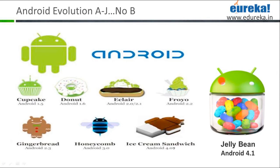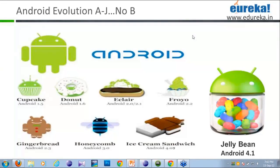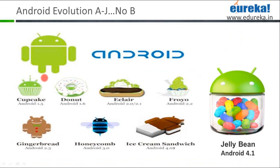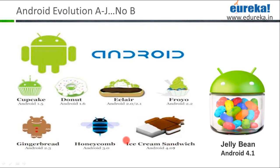Android has evolved from A to J. The first commercial version launched was Cupcake, then Donut, then Eclair, then Froyo, then Gingerbread — which is predominantly running on most Android devices. Then came Honeycomb, which was targeted completely for tablets, then Ice Cream Sandwich which most devices are upgrading to, and the very latest is Jelly Bean.